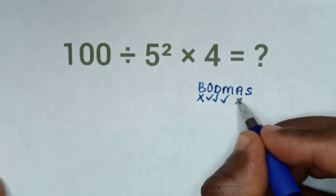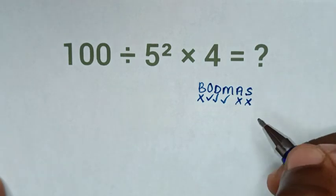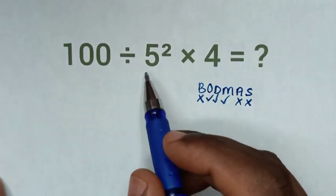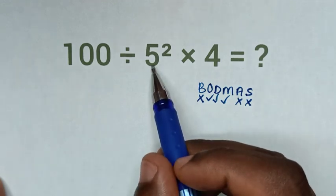And M is multiplication, we have multiplication. Addition, we don't have addition. Subtraction, we don't have subtraction. Then from here, order or exponent is 5 square, whereas 5 square is 5 times 5.